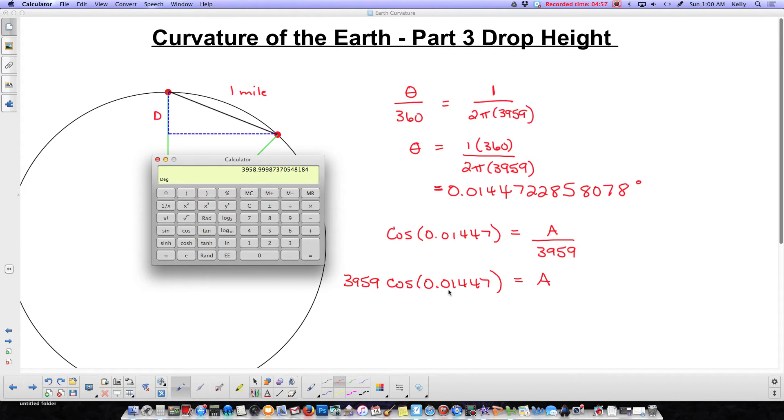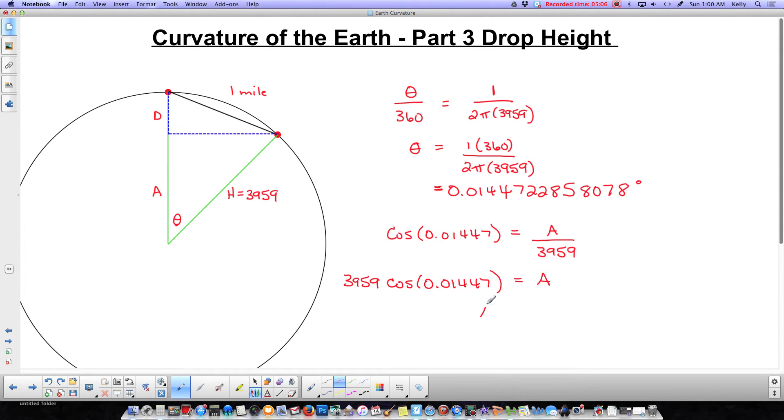And what I get is pretty darn close to the radius, but not quite, 3958.9998. So a equals 3958.9998. Now, of course, I'm going to use all of the digits on the calculator. I'm not going to write them all down because that's kind of an issue.